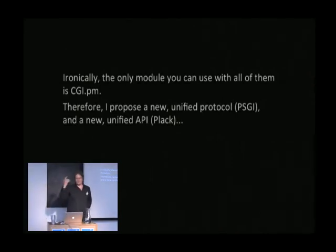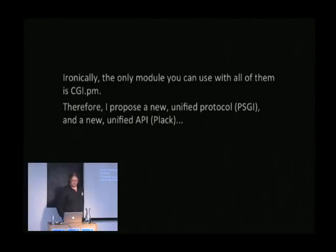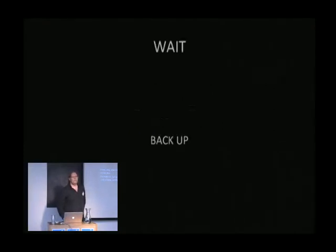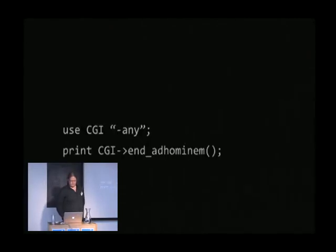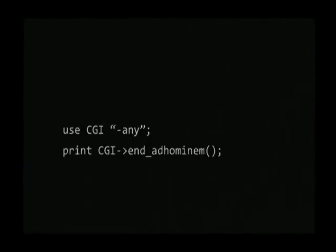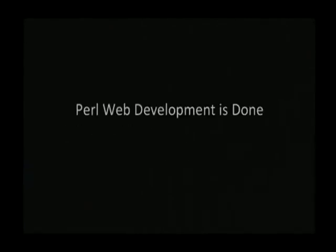And, ironically, the only module you can use which has the same API in all these environments is CGI PM. Therefore, I propose that we should have a new protocol, PSGI, a new implementation, a new API, Plack. Wait a minute — you just said pro web development is done with CGI PM. It's in the core.